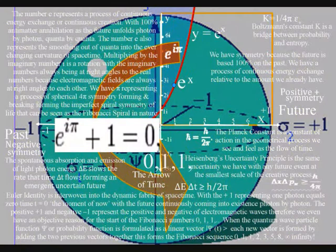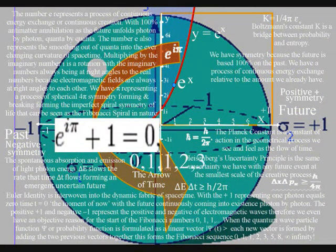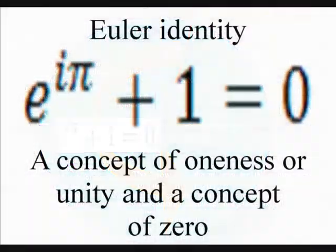Therefore we even have the start of the Fibonacci sequence in the diagram. This is linked to Euler's identity, giving this beautiful equation a place in the structure of space and time.